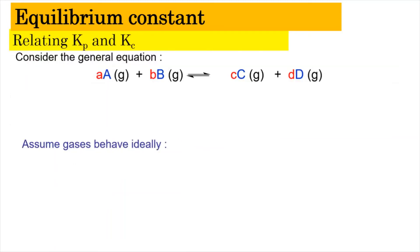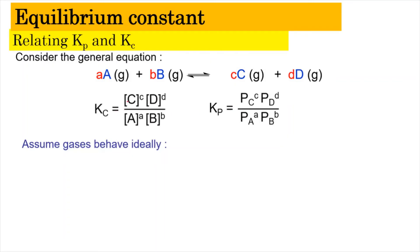Now we're going to learn how to relate Kp and Kc. Consider this general equation: aA(g) + bB(g) → cC(g) + dD(g). If we write the Kc expression, we get [C]^c × [D]^d divided by [A]^a × [B]^b. Similarly for Kp, we have (Pc)^c × (Pd)^d divided by (Pa)^a × (Pb)^b.